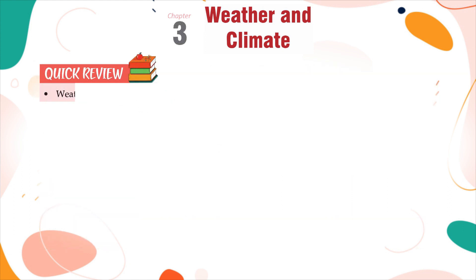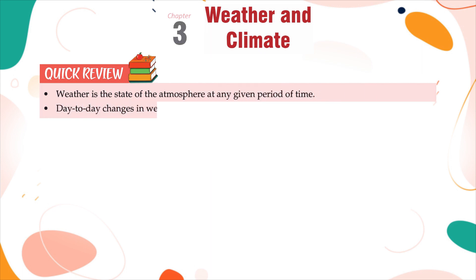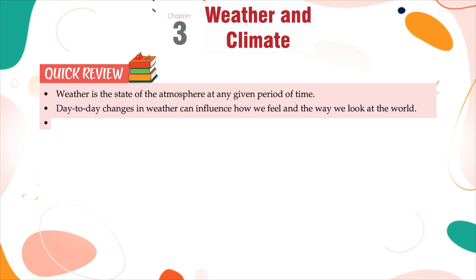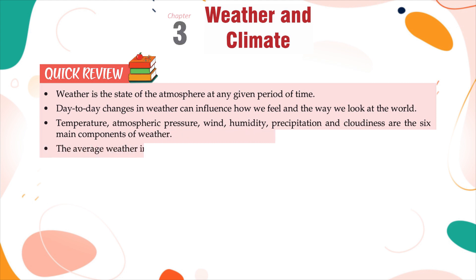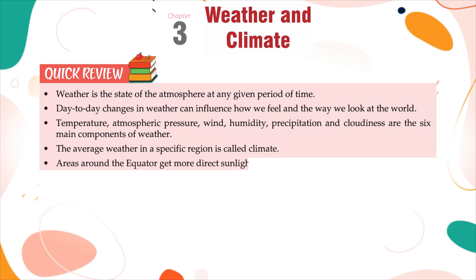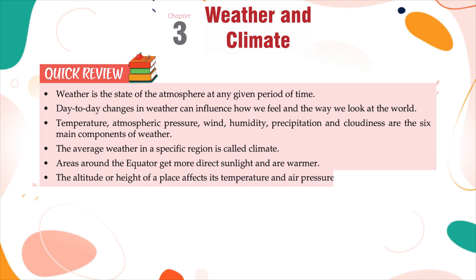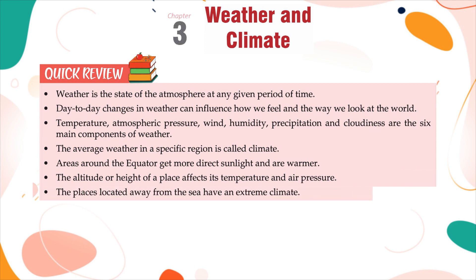Quick review. Weather is the state of the atmosphere at any given period of time. Day-to-day changes in weather can influence how we feel and the way we look at the world. Temperature, atmospheric pressure, wind, humidity, precipitation, and cloudiness are the six main components of weather. The average weather in a specific region is called climate. Areas around the equator get more direct sunlight and are warmer. The altitude or height of a place affects its temperature and air pressure. The places located away from the sea have an extreme climate.